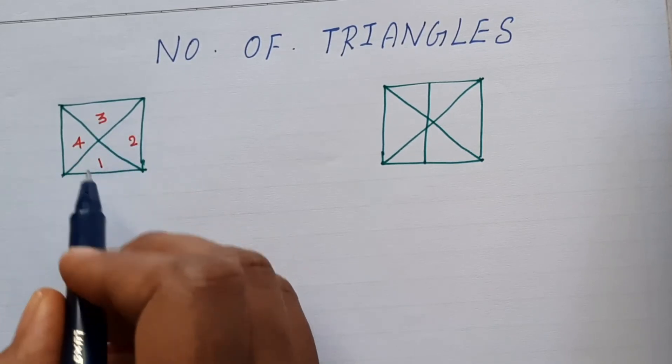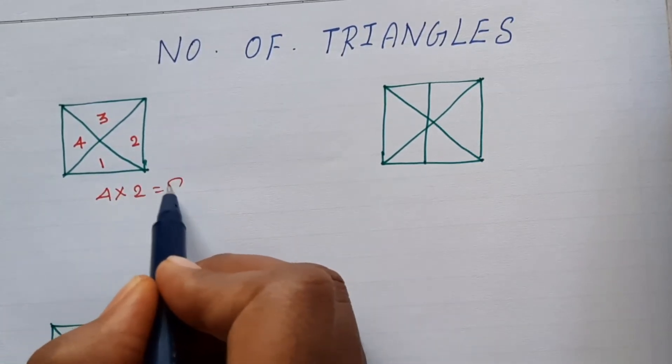Now, there is 4. 4 into 2. This is the answer. 4 into 2 is 8.